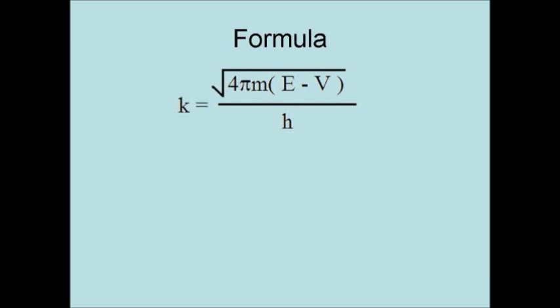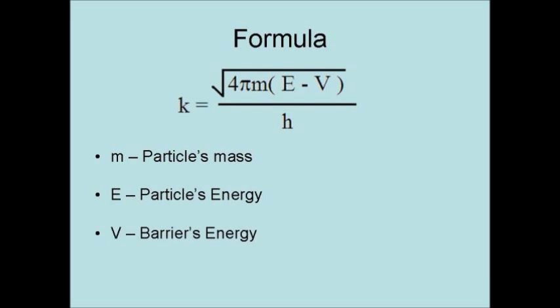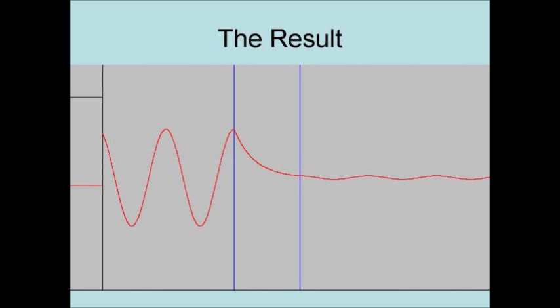The formula for a particle's wave number inside a barrier is k equals the square root of 4 pi m times e minus v divided by h. Where m is the particle's mass, e is the particle's energy, v is the barrier's energy, and h is Planck's constant, which is equal to 6.626 times 10 to the negative 34th power joule seconds.